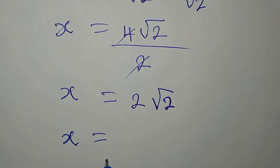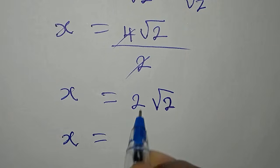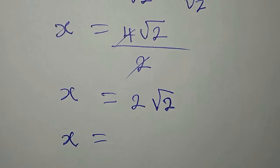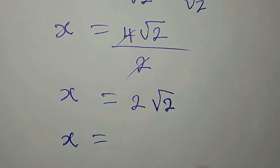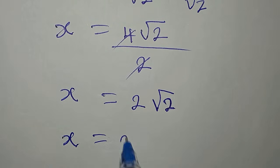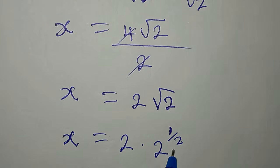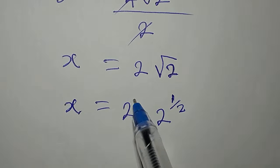have x to be equal to... you square this and multiply it by what we have here, but you can decide to leave it like this. Or, this is 2 multiply by 2 to the power of 1 over 2 because of the square root, right? Now this is to the power of 1.